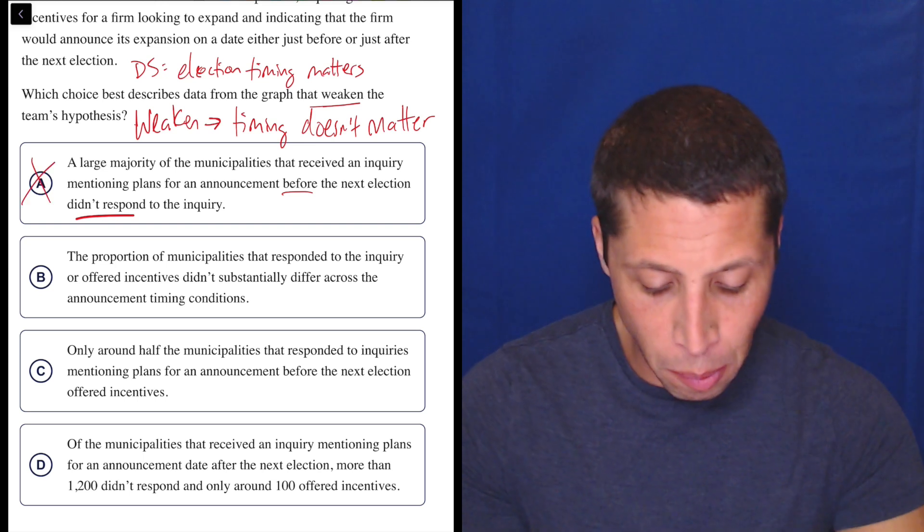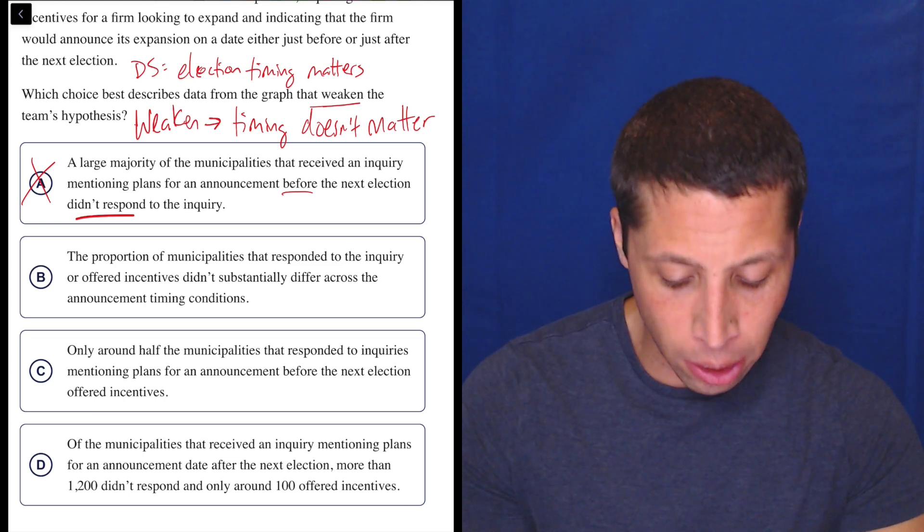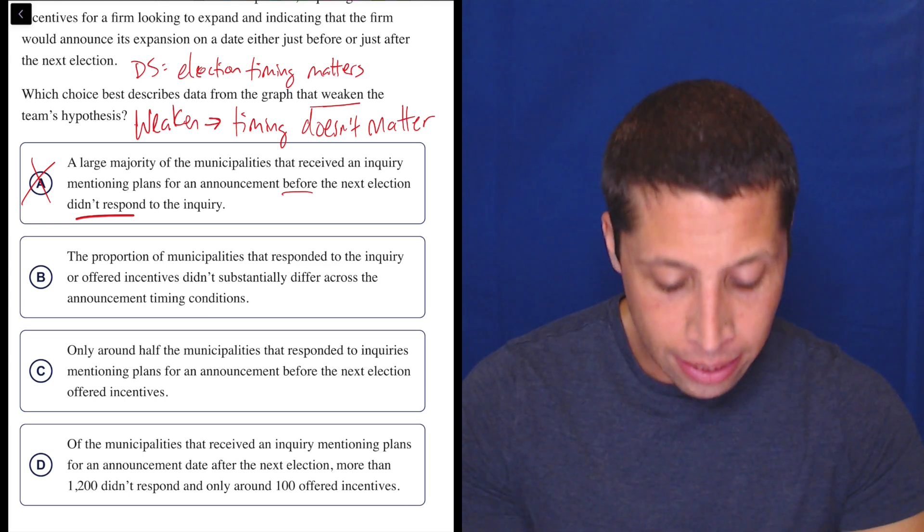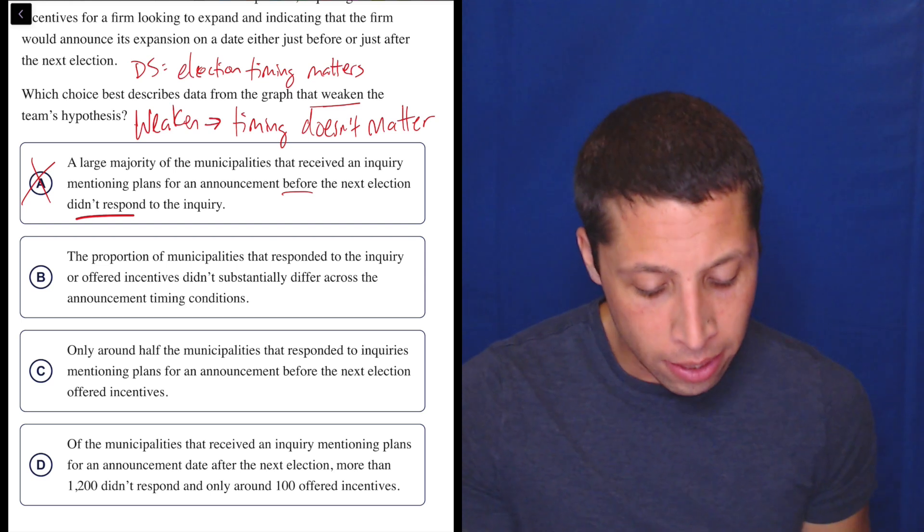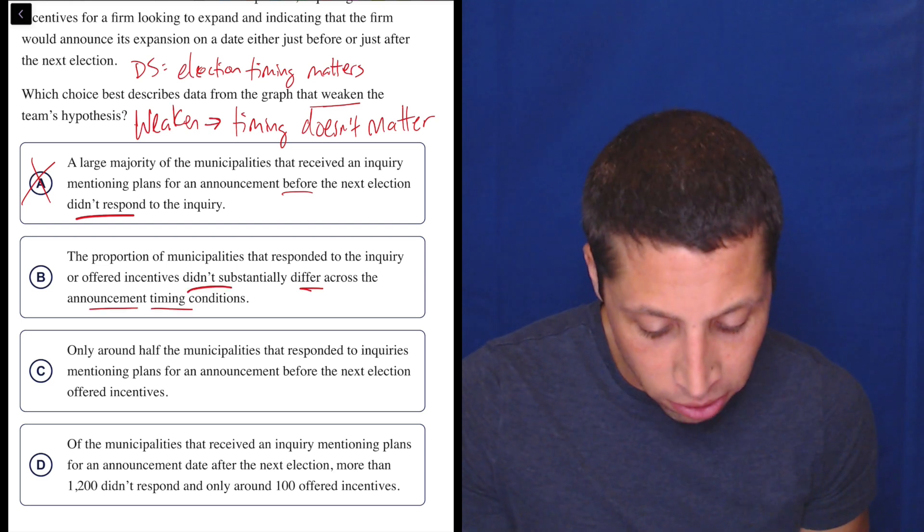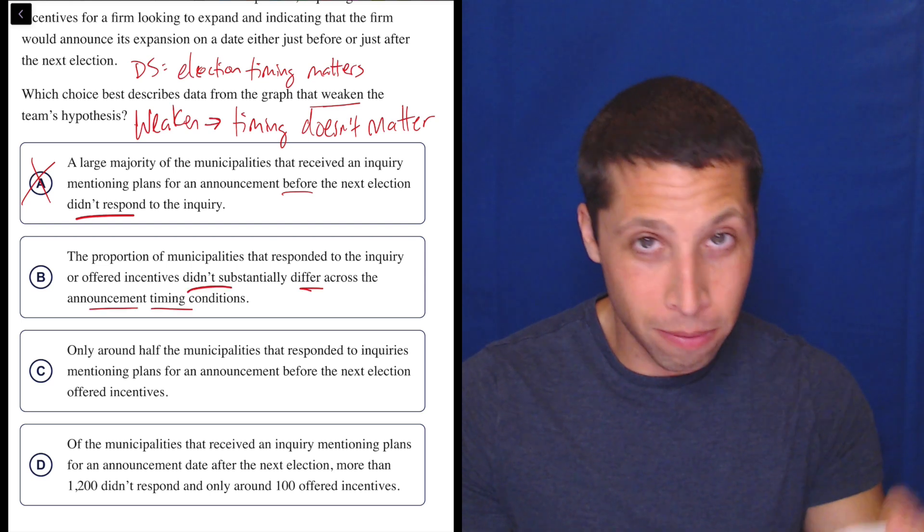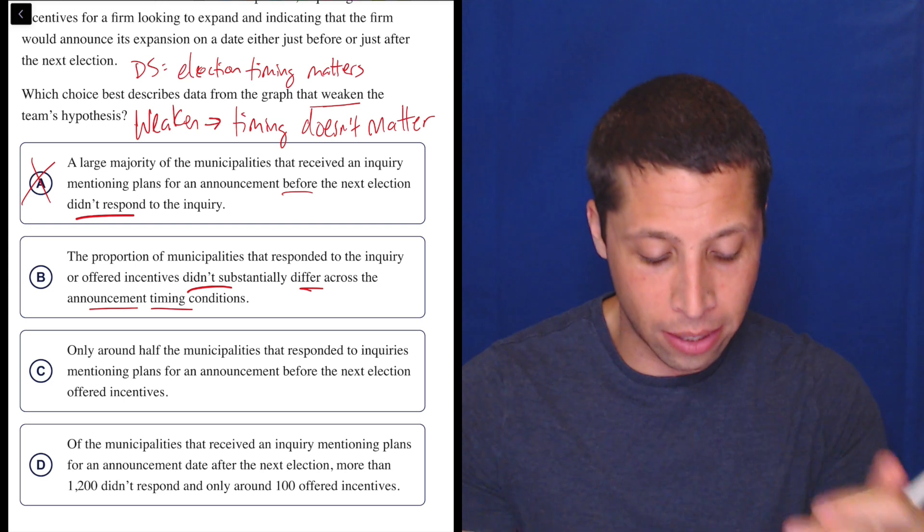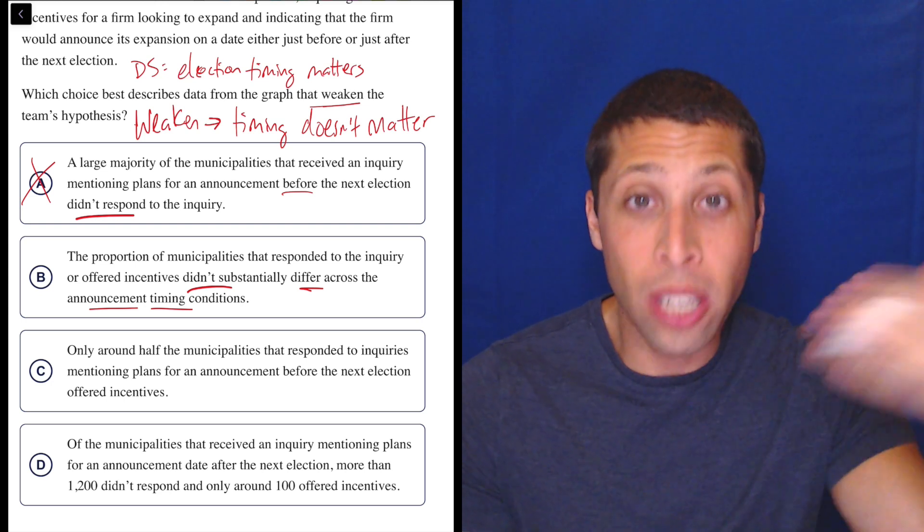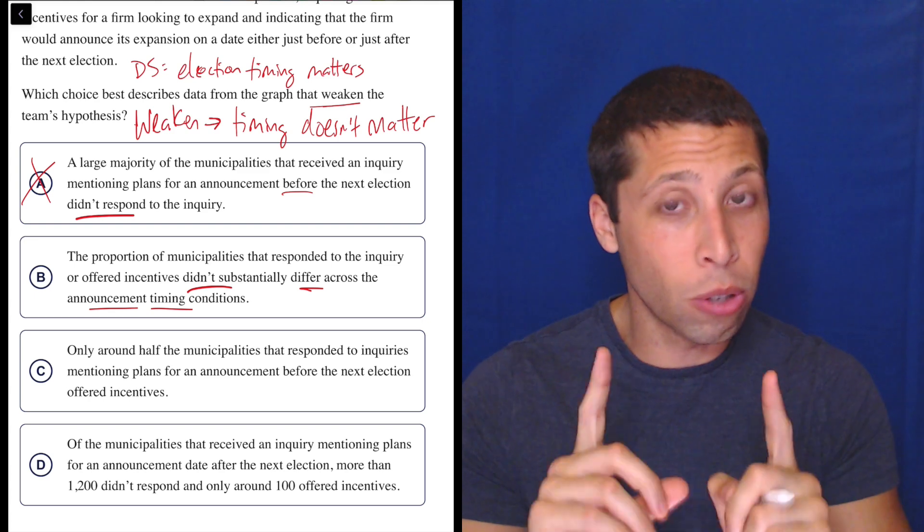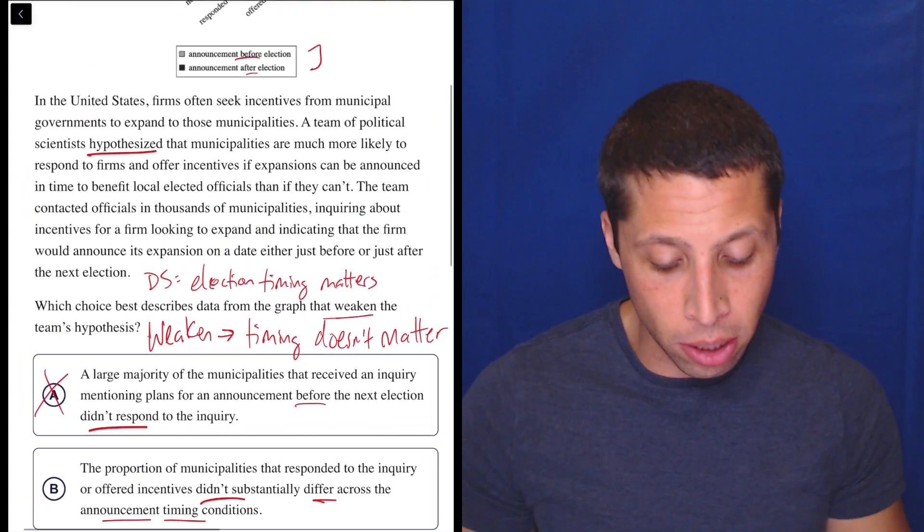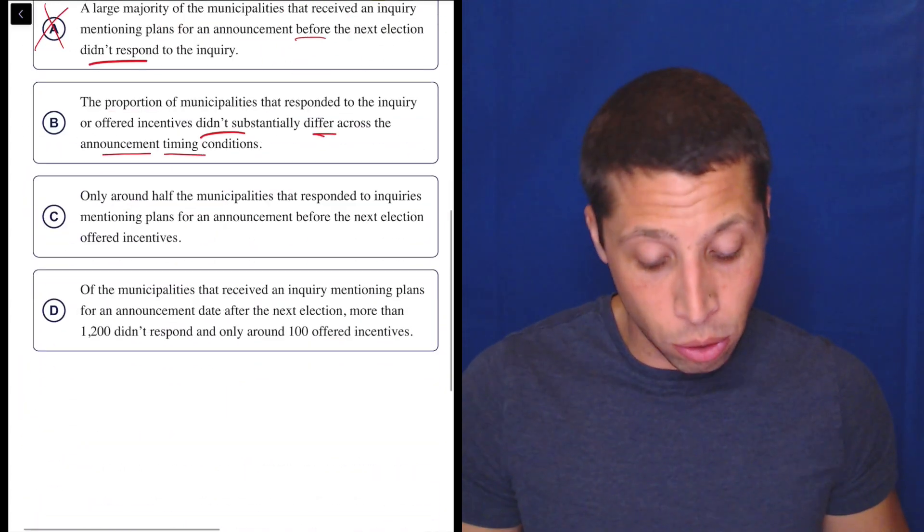The proportion of municipalities that responded to the inquiry or offered incentives didn't substantially differ across the announcement timing conditions, didn't differ across the timing. So that's basically what I just said in fancier language. The timing didn't matter. There's no difference based on the timing. So it doesn't mention before and after, but the timing conditions are before and after. So that looks really good.